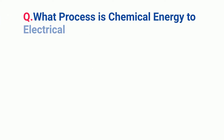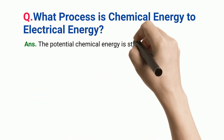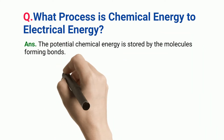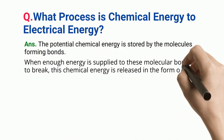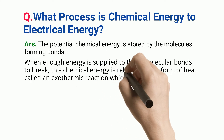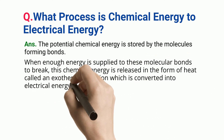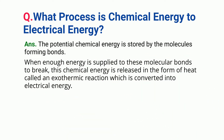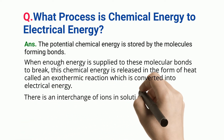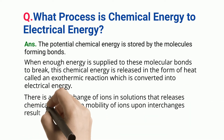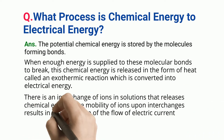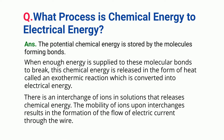What process is chemical energy to electrical energy? The potential chemical energy is stored by the molecules forming bonds. When enough energy is supplied to these molecular bonds to break, this chemical energy is released in the form of heat called an exothermic reaction, which is converted into electrical energy. There is an interchange of ions in solutions that releases chemical energy, and the mobility of ions upon interchange results in the formation of the flow of electric current through the wire.